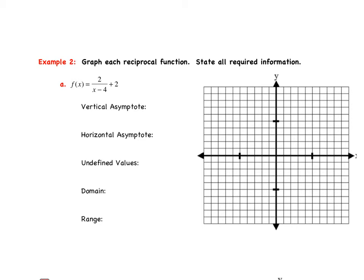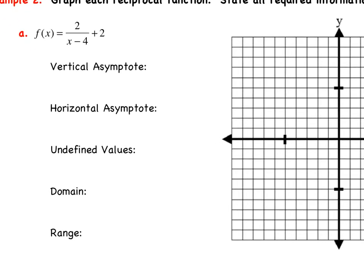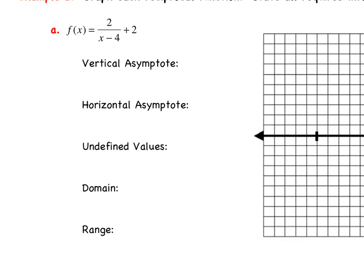We're going to get right into our first example — graph each reciprocal function and state all the information: vertical asymptote, horizontal asymptote, any undefined values, the domain and the range. Then we'll create a table of values and graph our reciprocal function. Remember, vertical asymptotes are when x equals h. The h value here is 4, so our vertical asymptote is x equals 4. The horizontal asymptote is y equals k, and our k value is 2, so we have a horizontal asymptote of y equals 2.